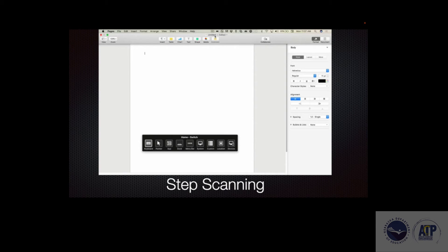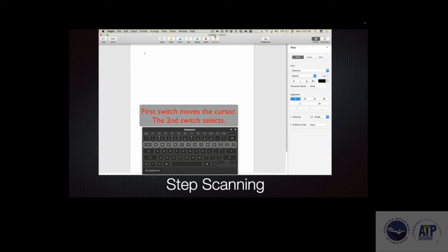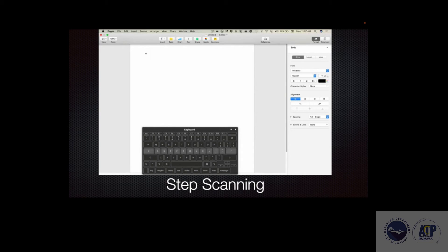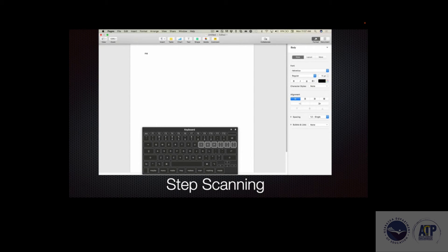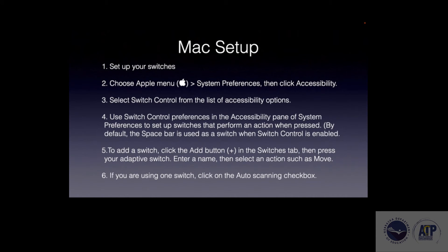Here's an example of step scanning. The system rapidly moves through keyboard groups and individual keys — Keyboard, Group One, Group Three, Group Four, Group Two, V, B, N, M — demonstrating how quickly you can navigate using step scanning compared to automatic scanning.